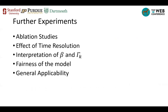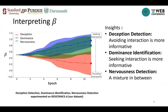We highlight two further experiments. In the first, we study the interpretation of beta, the learnable parameter controlling the relative importance of proactive interaction versus avoidance. The figure shows how beta converges during training, epoch by epoch, with small perturbations to its initial value across multiple runs. Beta converges to very different values for different tasks: for deception detection, beta ends up very small, meaning avoiding interaction is more informative; for dominance identification, beta goes to a very large value, meaning seeking interaction is more informative. Nervousness detection is in between. This coincides with findings from psychological theory.